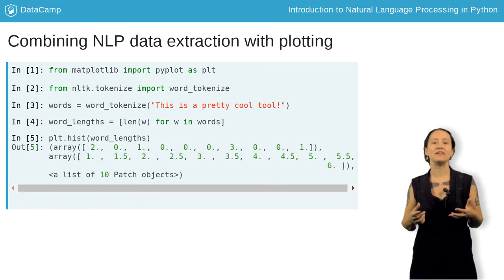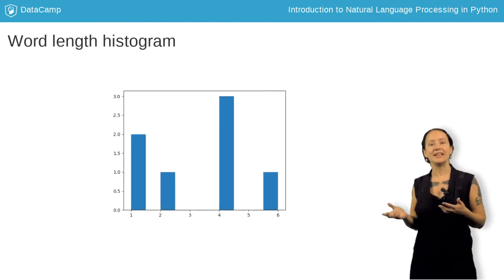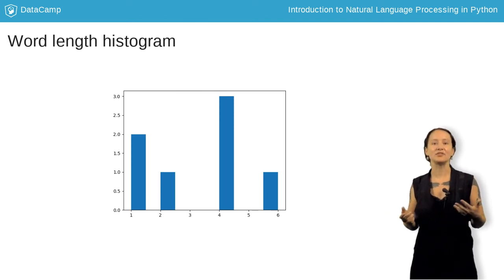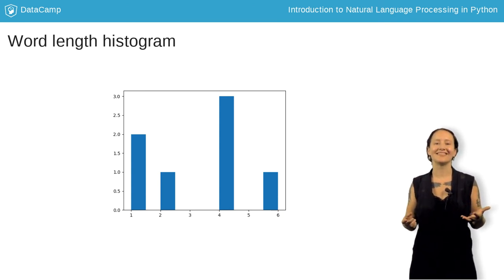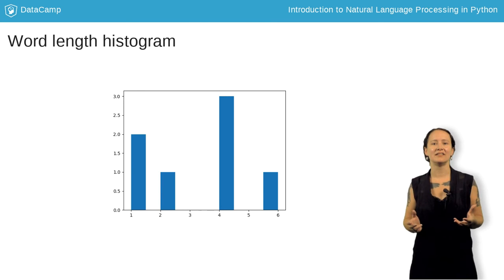We then pass this array of token lengths to the hist function and generate our chart using the plot.show function. Here is the generated histogram from our previous code. We can see from the chart that we have a majority of four-letter words in our example sentence. Of course, with a simple sentence, that's easy enough to simply count by hand. But for an entire play or book, this will be tedious and prone to error. So, writing it in code makes it a lot easier.